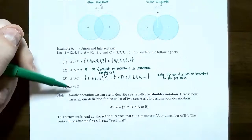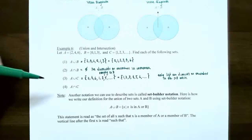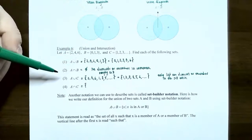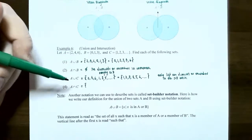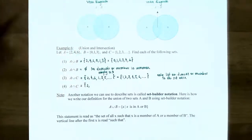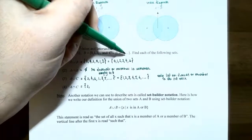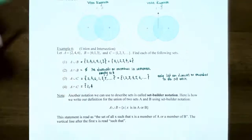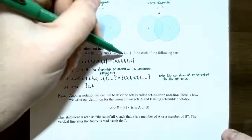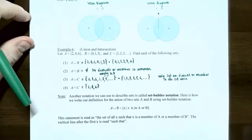Number four: A intersect C. What elements are in common with A and C? It would be the set of elements that must be in both A and C together. 2 is in A and also in C. 4 is in A and also in C. And 6 is in A, and 6 will be in C as well because C continues in the same pattern forever. So the intersection is just 2, 4, and 6.